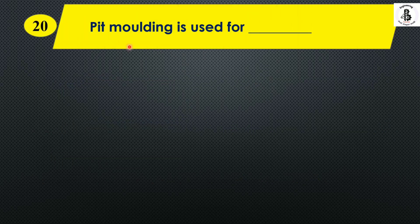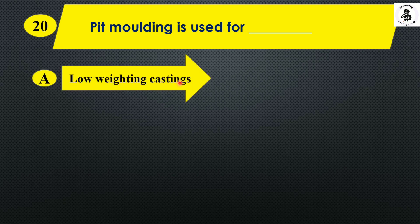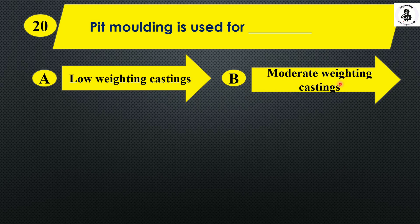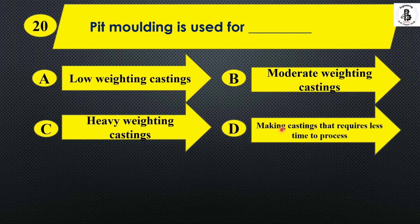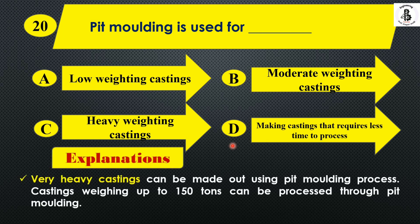Question 18: Peat molding is used for — Option A: low-weight castings. Option B: moderate-weight castings. Option C: heavy-weight castings. Option D: castings that require less processing time. In the peat molding process, very heavy castings are made — castings weighing up to around 150 to 160 tons can be processed through peat molding. So the right answer is Option C, heavy-weight castings.